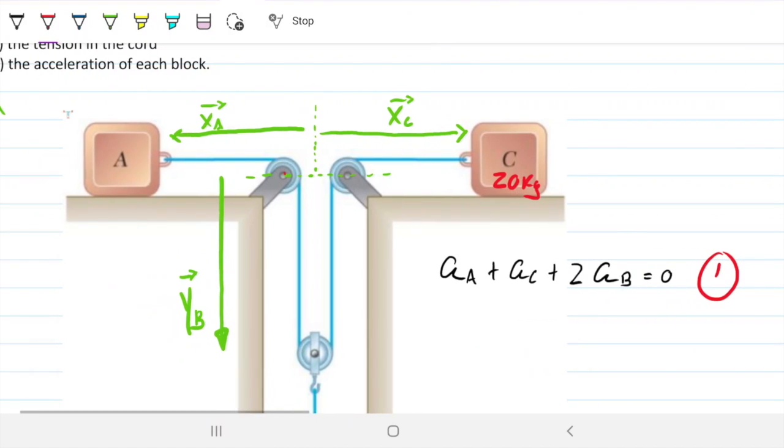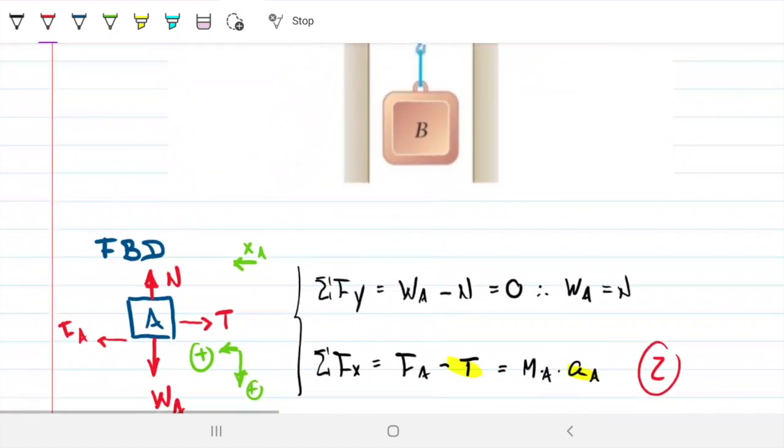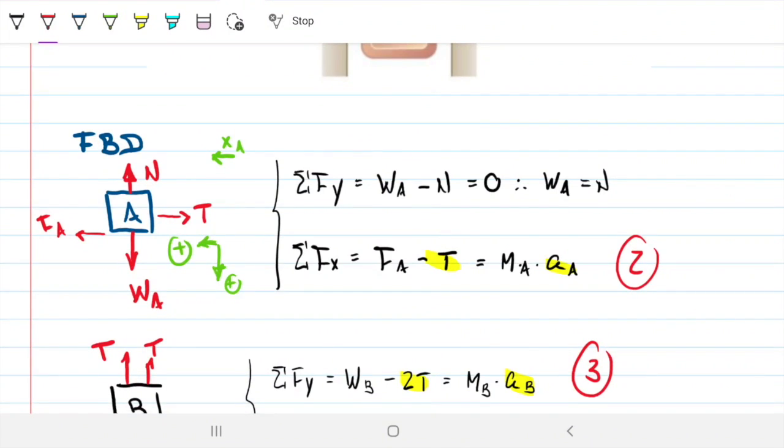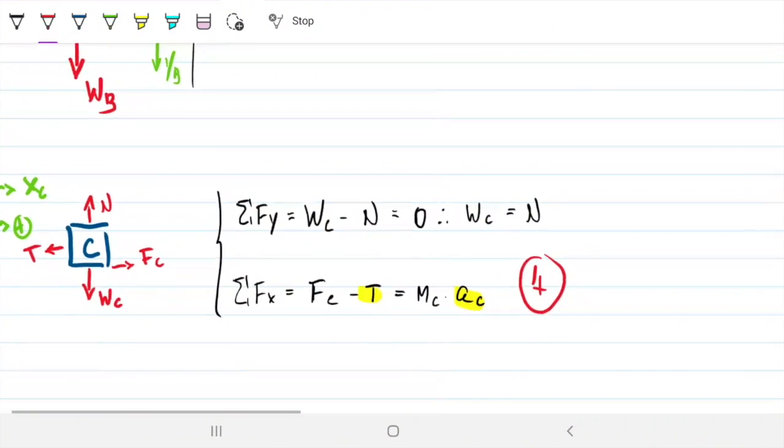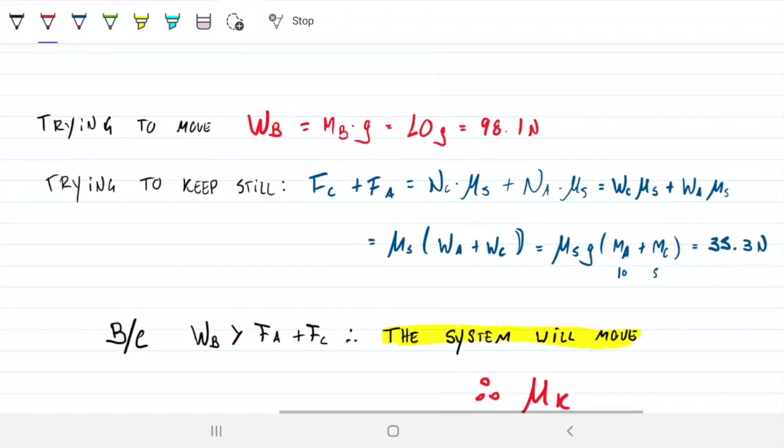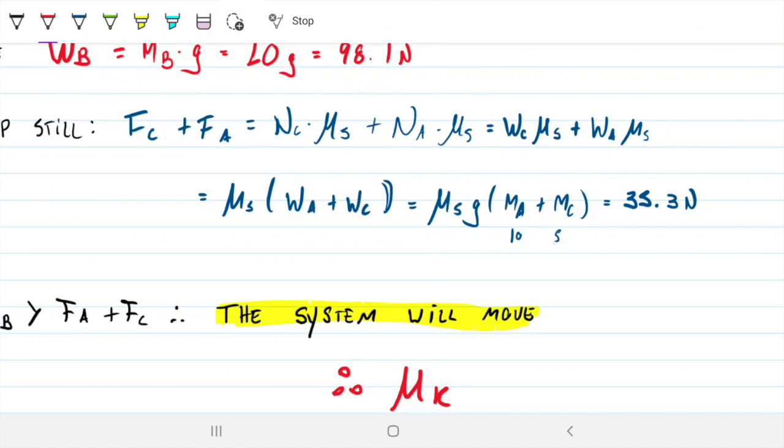So this equation still remains the same. My positioning of my vectors, YB, XA, XE, all the same. Then we're going to do the free body diagrams, they're all going to be the same. These equations are all the same. So what are we going to do? What's going to change over here? Instead of having this as 10 before, now it's going to be 20. So this is 20 now.